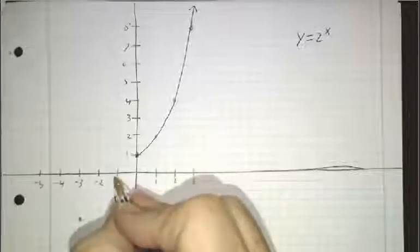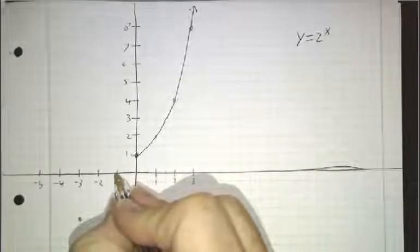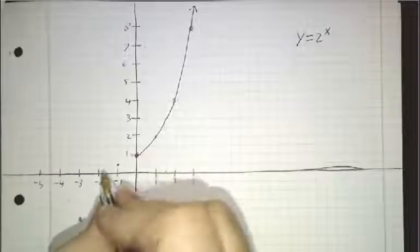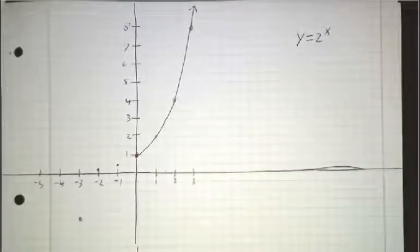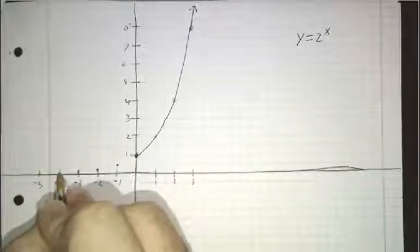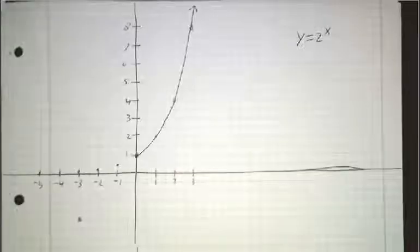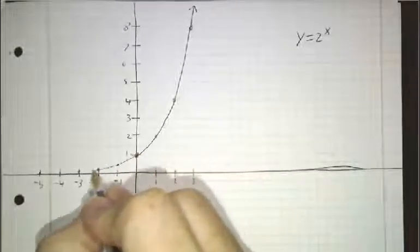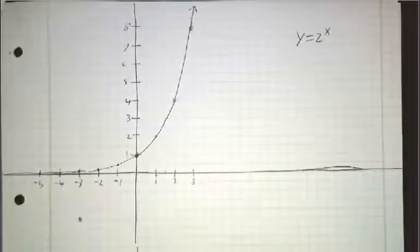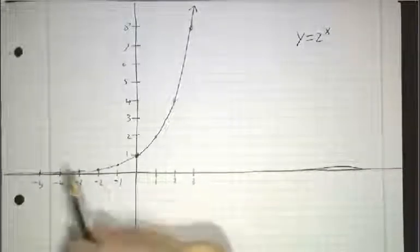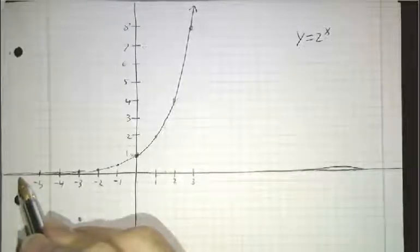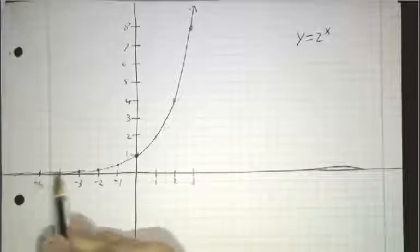How about on the other end? 2 to the minus 1, by definition, is a half. 2 to the minus 2 is 1 over 2 squared, that's a quarter. 2 to the minus 3 is an eighth. 2 to the minus 4th is a 16th. 2 to the minus 5th is a 32nd. By the time you get a little ways to the left, you really can't see the difference between our curve and the x-axis. So an exponential on the left becomes very much like the, you know, approaches the x-axis. It has a horizontal asymptote.